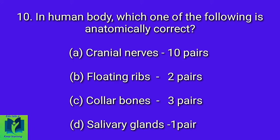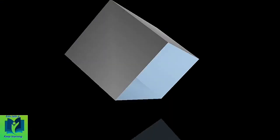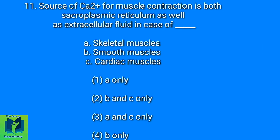In human body, which one of the following is anatomically correct? Option A: Cranial nerves 10 pairs. Option B: Floating ribs 2 pairs. Option C: Collar bones 3 pairs. Option D: Salivary glands — floating ribs 2 pairs.